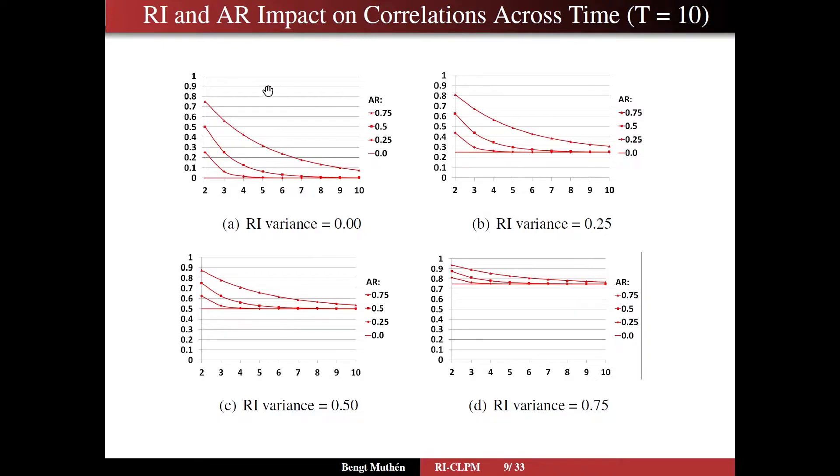With an autoregression of 0.75, the correlation between the first and second time points is 0.75, and then it goes down, declines over time, and goes down towards zero as the time increases. If you have a random intercept variance, then the correlation does not go down to zero, but goes down to the random intercept variance. This is all for a model which has the same unit variances for the observed variables, so the metric is easy to understand.